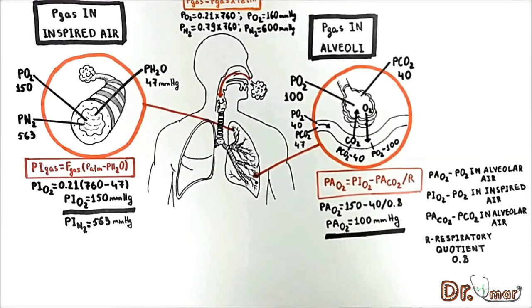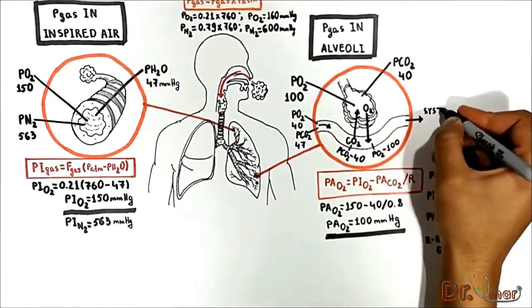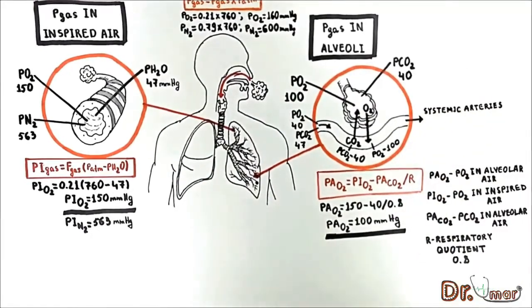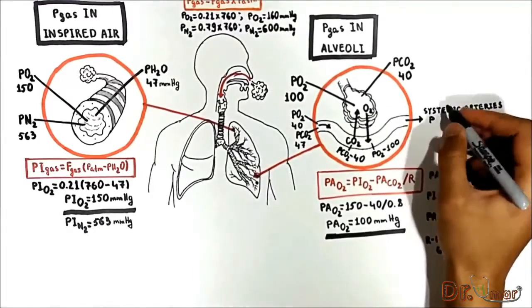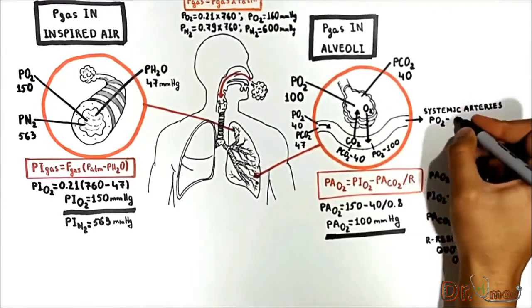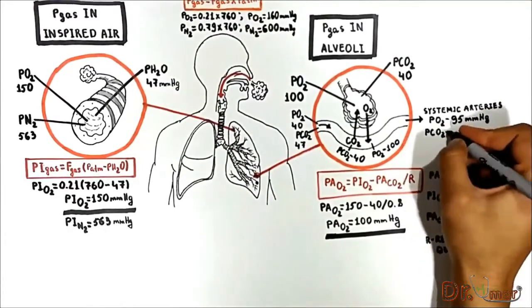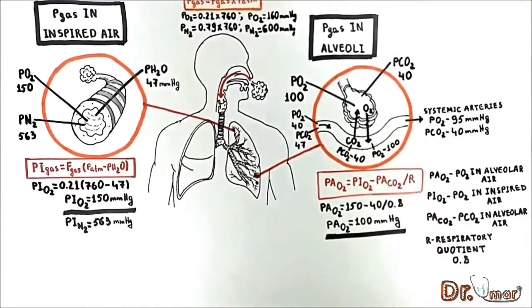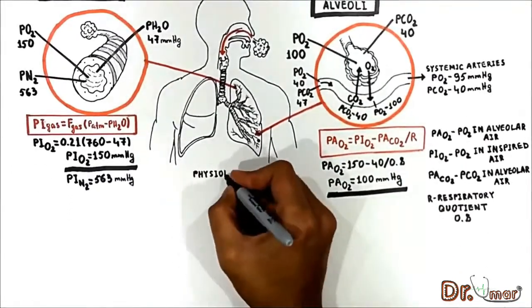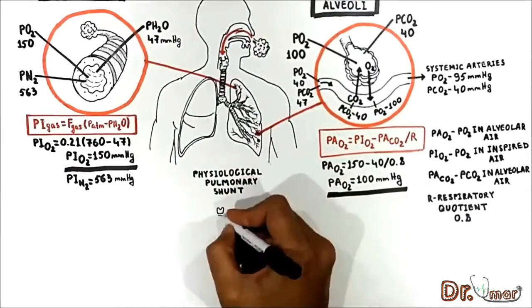It is extremely important to know that in systemic arteries we have a tiny drop in PO2. The PO2 in systemic arteries drops to 95 mmHg but PCO2 remains 40. So what is the reason of falling PO2 in systemic artery? This brings us to physiological pulmonary shunt.